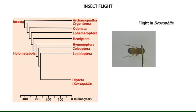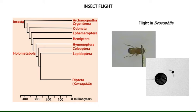Insect flight is a complex behavior that evolved approximately 350 million years ago. Evolution of flight enhanced the ability of insects to escape from unfavorable environmental conditions.